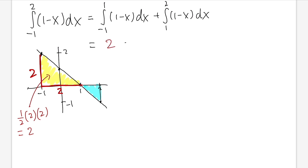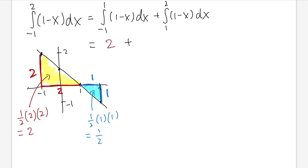Now for the second triangle. From 1 to 2, the base is 1. From here to here is also 1. So the area is 1/2 times 1 times 1, which gives us 1/2. But because the region is below the x-axis, the integral is negative 1/2. Finally, 2 minus 1/2 gives us 3/2.